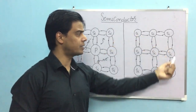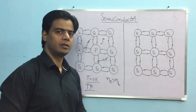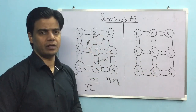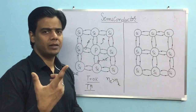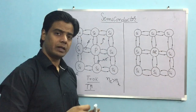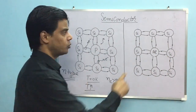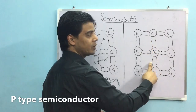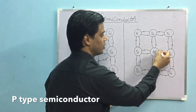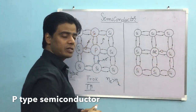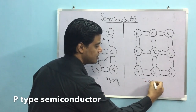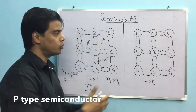Now let us look at the other diagram. I have taken an intrinsic semiconductor again. This time, I will replace this silicon atom with a trivalent impurity from group 13 — a simple example is aluminium. I have replaced this silicon atom with aluminium, but aluminium only has 3 valence electrons, so one bond position has no electron and a vacancy is already created.